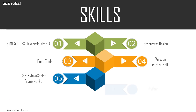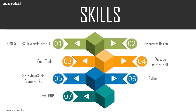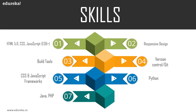For back-end skills, first is Python, an open-source object-oriented programming language and a favorite among software and web developers. Next is Java, a high-level programming language compatible to run on any platform, and PHP, a server-side scripting language used to develop the backend logic of applications. Finally, Node.js is an open-source JavaScript framework used specifically for creating the back-end or server side of an application, allowing JavaScript to run on the server side of the web.